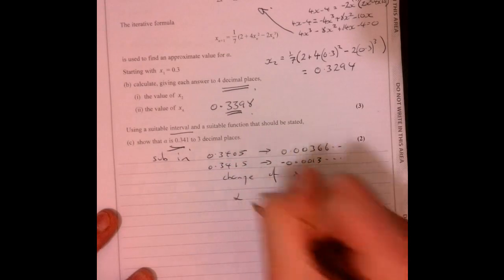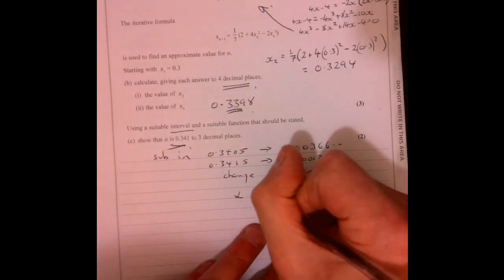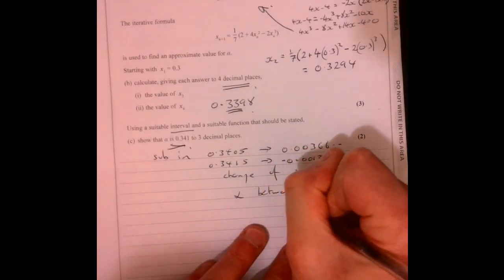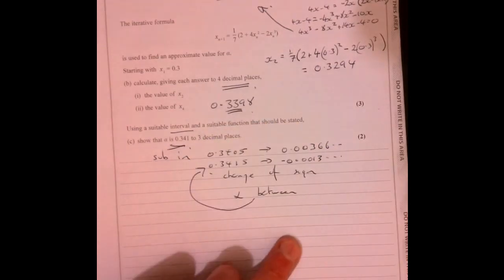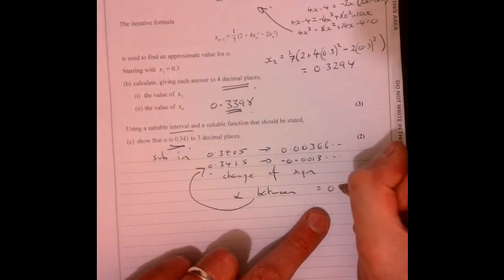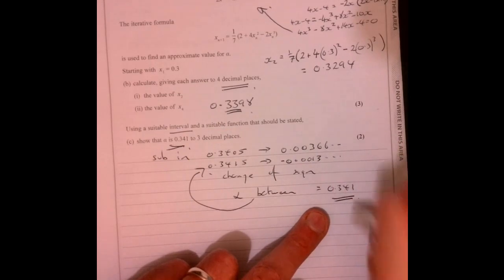So therefore, alpha must be between these figures here, hence equal to 0.341 to 3 decimal places.